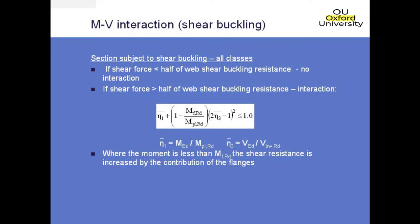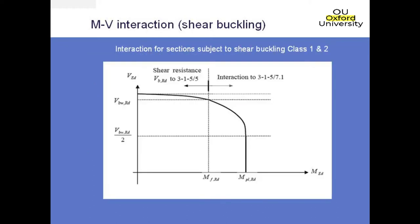The full shear resistance contribution is then just obtained for the moment where the moment is less than MF,RD. The actual interaction is shown on this diagram here. It is a little bit different from the section where we had no shear buckling because you've got a bit of a curve to this part of the interaction. But otherwise it's essentially a very similar interaction using slightly different numbers. Again, you do get quite a lot more benefit than what you had for BS5400.